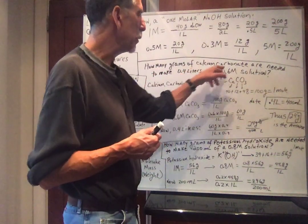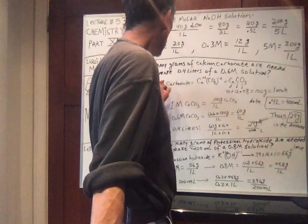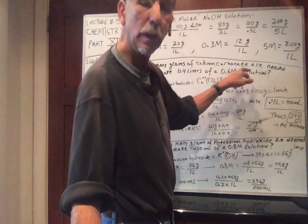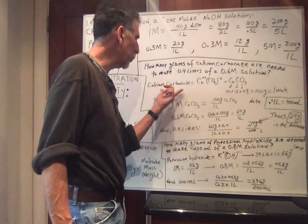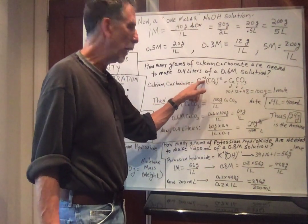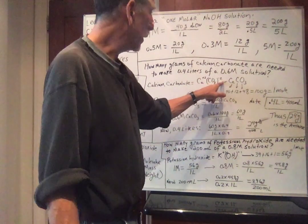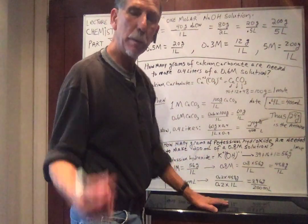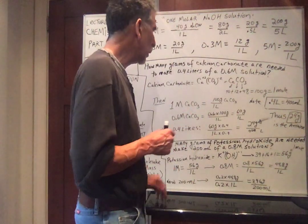So let's do another one. How many grams of calcium carbonate? Again, I picked an easy compound. Are needed to make 0.4 liters of a 0.6 molar concentration solution. So let's first look at calcium carbonate, CaCO3. Calcium is group 2A, wants to give two electrons. Carbonate, polyatomic, wants to take two electrons. So one calcium with one carbonate is good. Calcium carbonate is also what chalk is made of, limestone is made of.